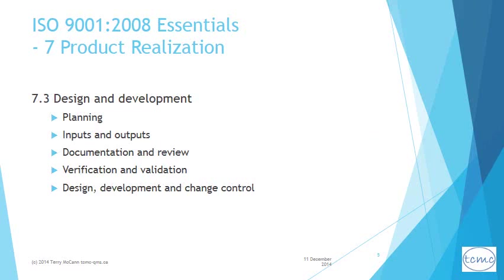7.3 goes to the heart of controlling design and development. While planning required in 7.1 covers the whole range of activities for product or service realization including production and manufacture, planning required under 7.3 is specific to a unique design instance of a specific product, project, or contract. Planning under 7.3 does not need to repeat processes covered under 7.1, but only document what processes will cover design and development-related activities prior to manufacturing and production, such as appropriate review, verification, and validation activities for each stage of design and development.